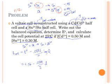And we have to do the log of Q. Well, Q is products over reactants, and in equilibrium, as you recall, we don't include solids in the equilibrium constant. So it would be the cadmium ion concentration over the tin ion concentration.